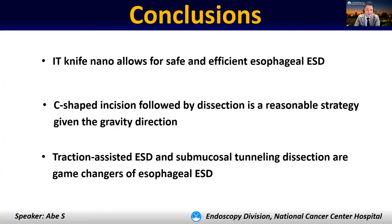In conclusion, the IT knife nano allows for safe and efficient esophageal ESD. C-shaped incision followed by submucosal dissection is a reasonable strategy given the gravity direction. Traction-assisted ESD and submucosal tunneling dissection are game-changers of esophageal ESD. Once you master the tips and tricks of esophageal ESD using IT knife nano, you'll be able to achieve a steep learning curve. Thank you so much for your kind attention.